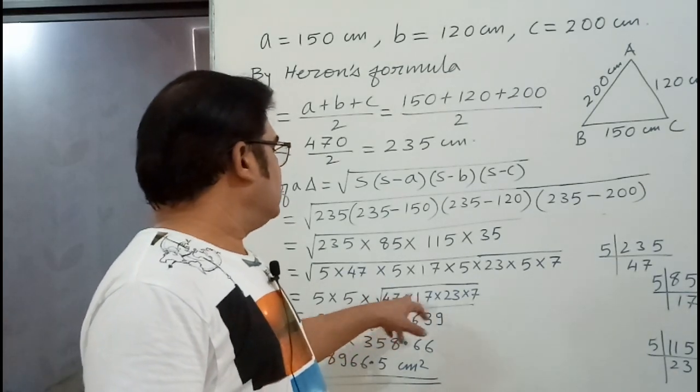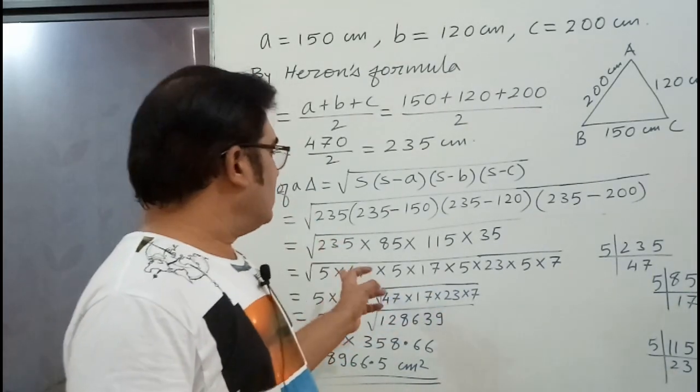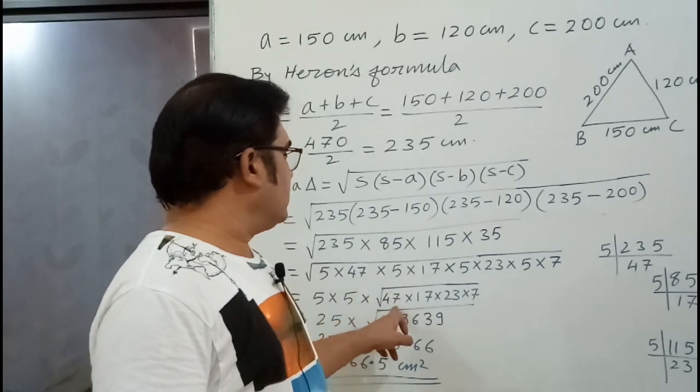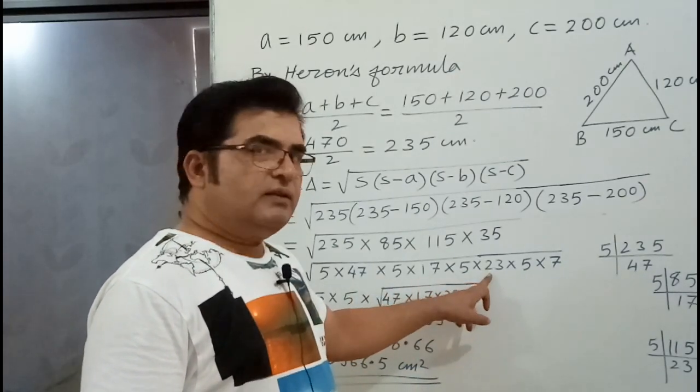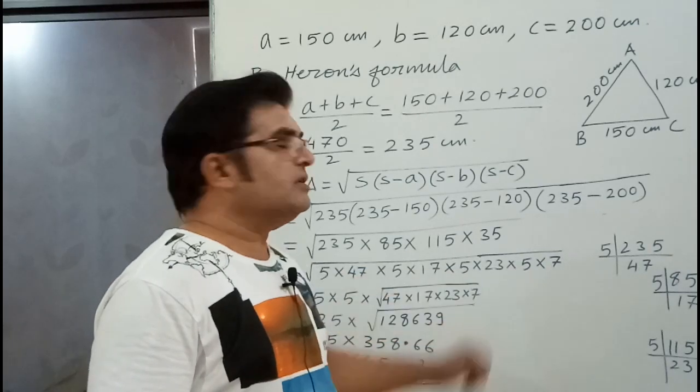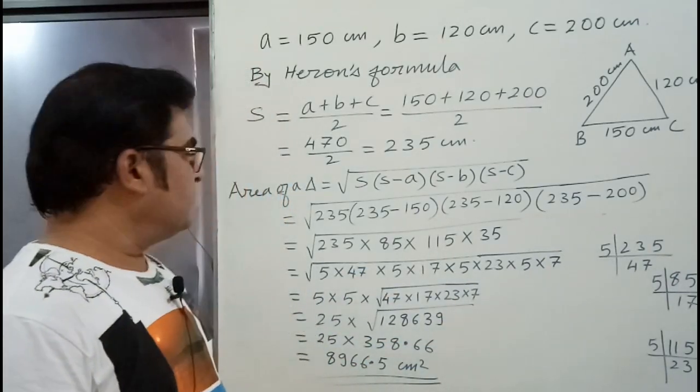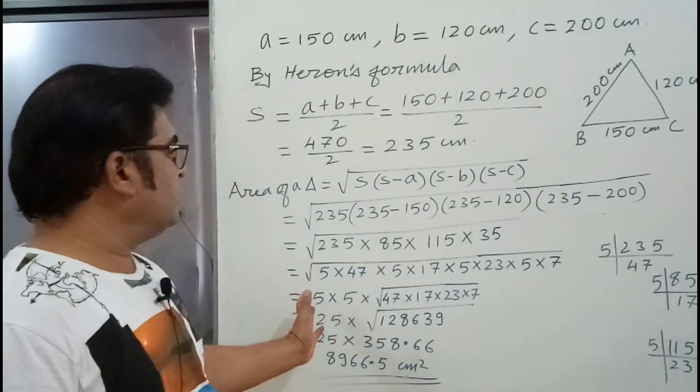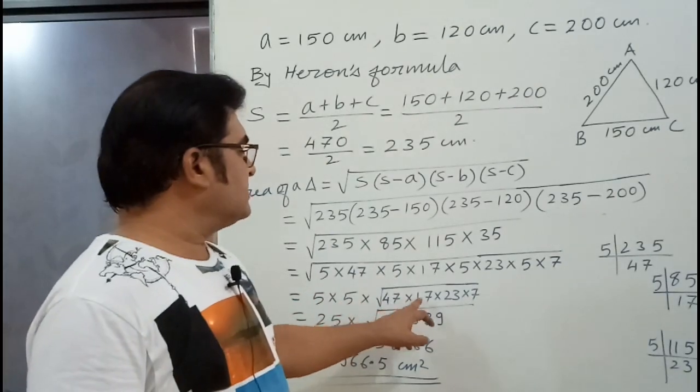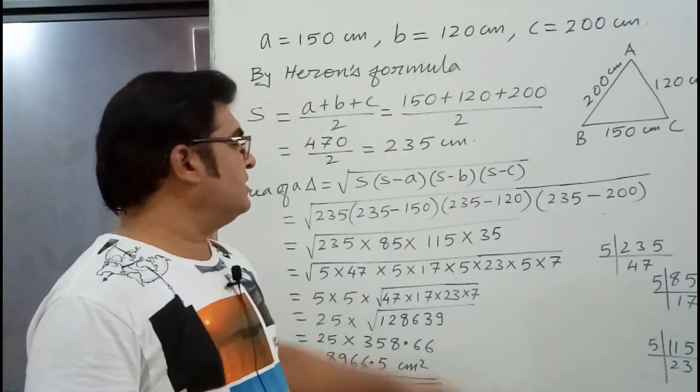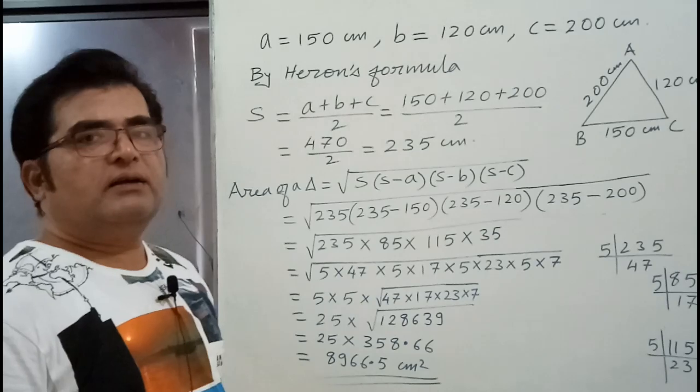Then, in square root, they are not in pair. 47 is not in pair. 17 is not in pair. 23 is not in pair. And 7 is also not in pair. So 5 into 5 will be outside the root, into 47 into 17 into 23 into 7. They will be under the root.